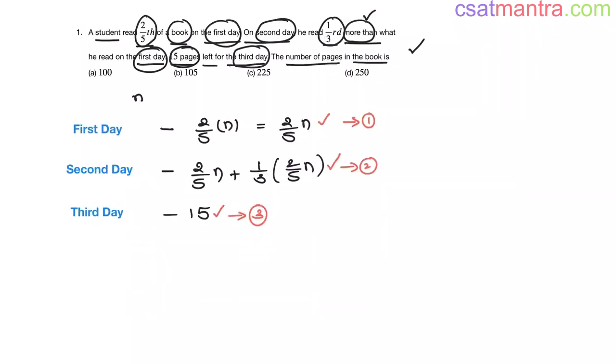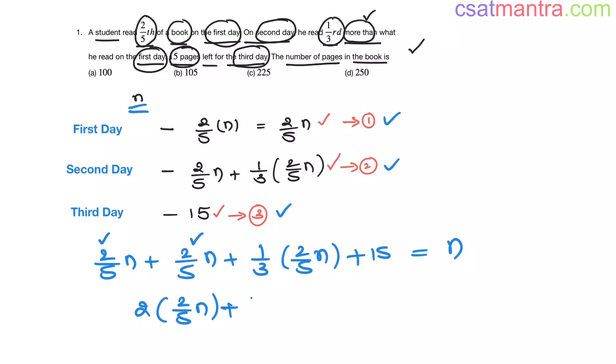So, adding equation 1 and 2 and 3. 2/5 n plus 2/5 n plus 1/3 of 2/5 n plus 15 is equal to n. Total number of pages. Now, 2/5 n plus 2/5 n that is 2 into 2/5 n plus 1/3 of 2/5 n plus 15 is equal to n.